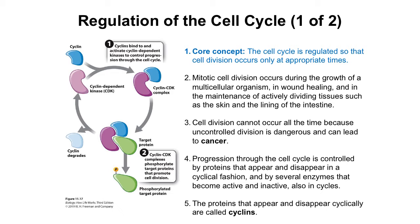The core concept concerning cell cycle regulation is that the cell cycle is regulated so that cell division occurs only at the appropriate time and place. Mitotic cell division occurs during the growth of a multicellular organism, in wound healing, and in the maintenance of actively dividing tissue such as the skin and the lining of the intestine. Cell division cannot occur all the time because uncontrolled division is dangerous and can lead to cancer.